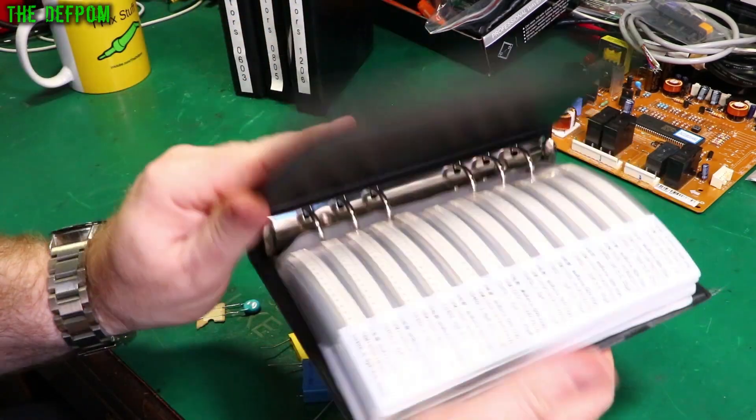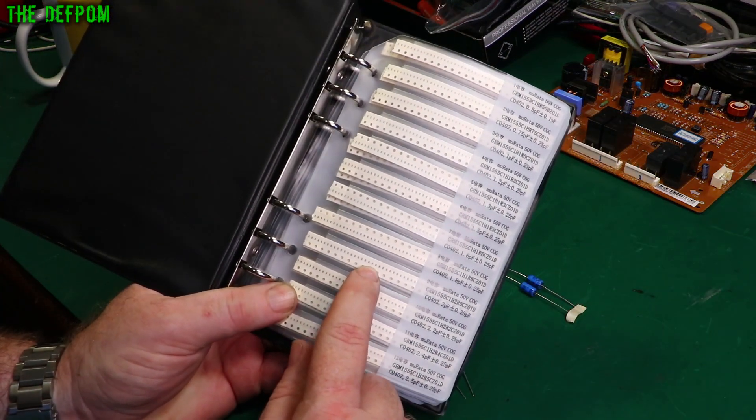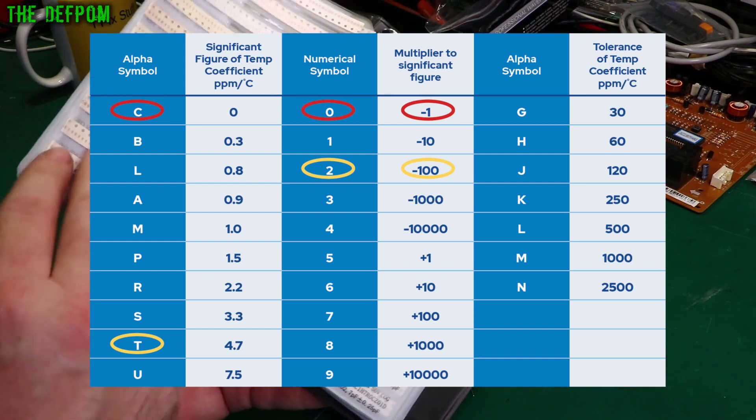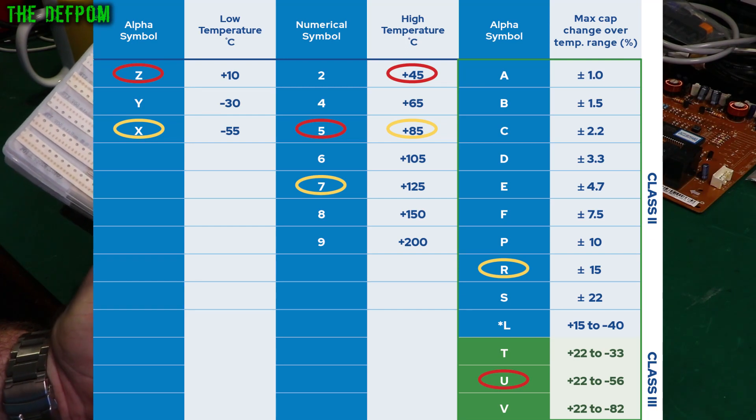Obviously I've got surface mount caps here as well. So these are 0402s. These ones. Tiny little ceramic capacitors. These also have their own ratings. They've got COG and the other ones in here, X7R. These have different ratings as well.